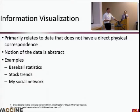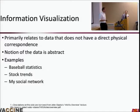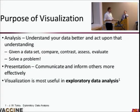Information visualization is thought of as not having direct physical correspondence in the data. You might think of social networks in a graph — the notion of the data is abstract. Things like baseball statistics, stock trends, and those sorts of things. But the purpose of both scientific visualization and information visualization is analysis.